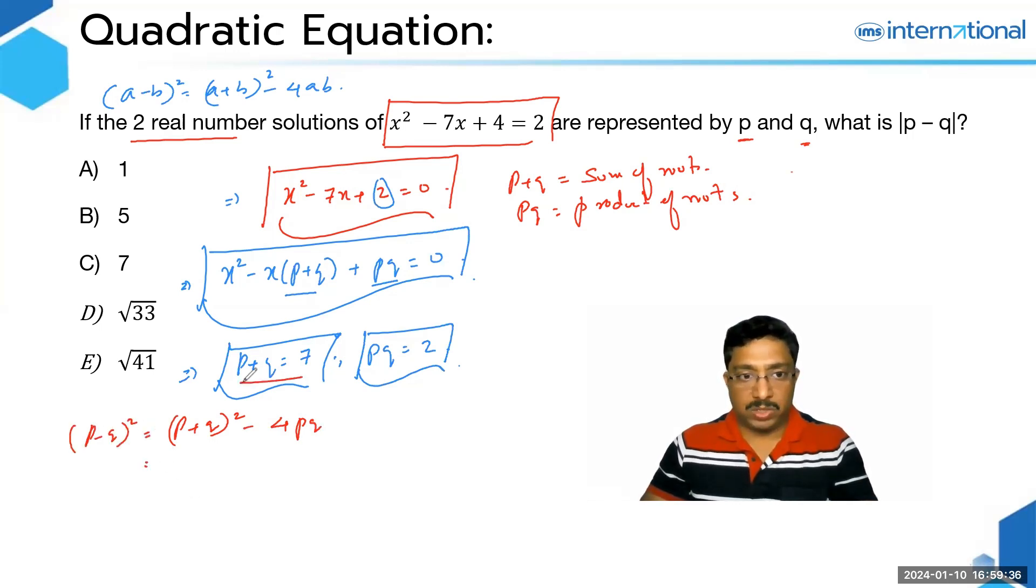So we have P + Q as 7, plug it over here. This is 7². We have PQ as 2, so plug it over here in place of PQ. We have 4 times 2. So this becomes 49 - 8, which is 41.